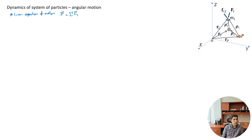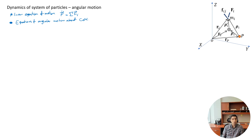Let's start with equations of angular motion about center of mass. In the linear domain, we didn't have to worry about a point, because it didn't exist. But in the angular domain, we always need to think about which point or axis we are writing equations about. So let's look at the one about center of mass.